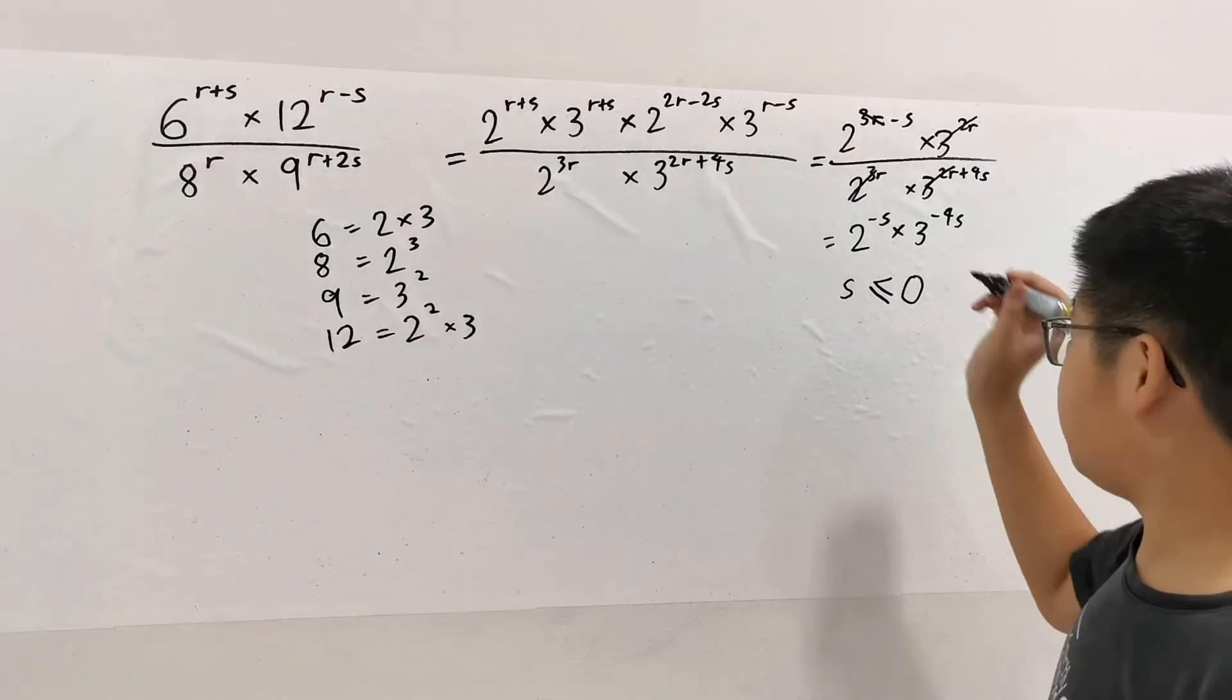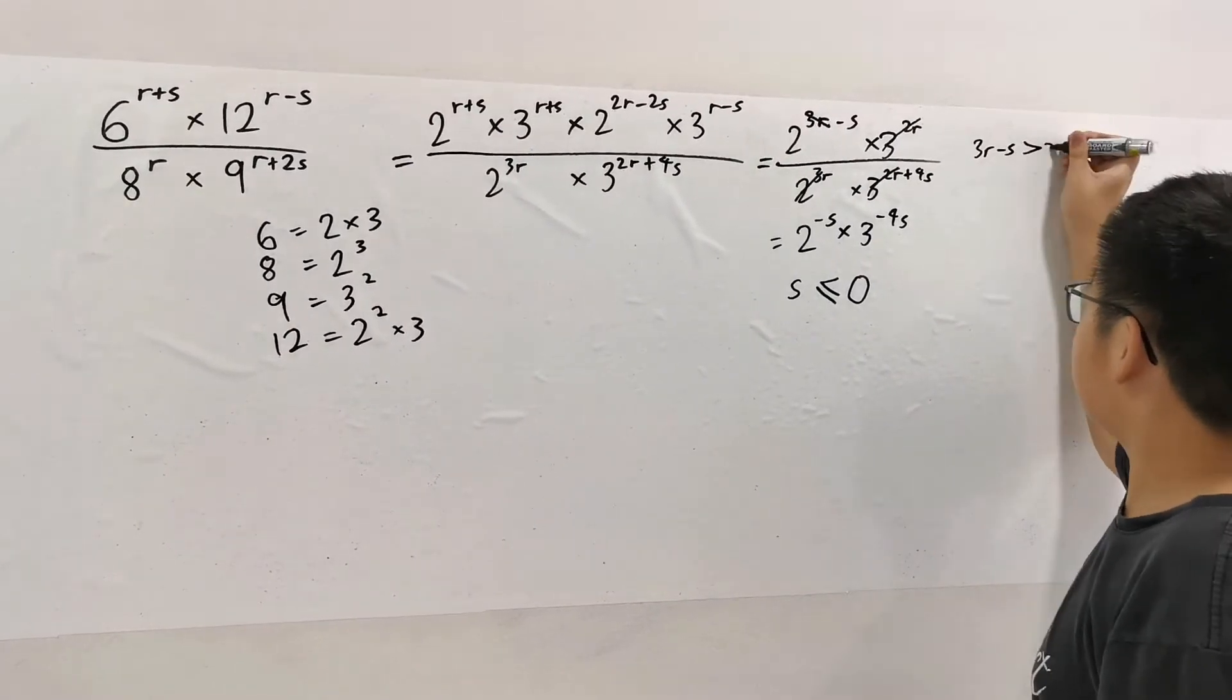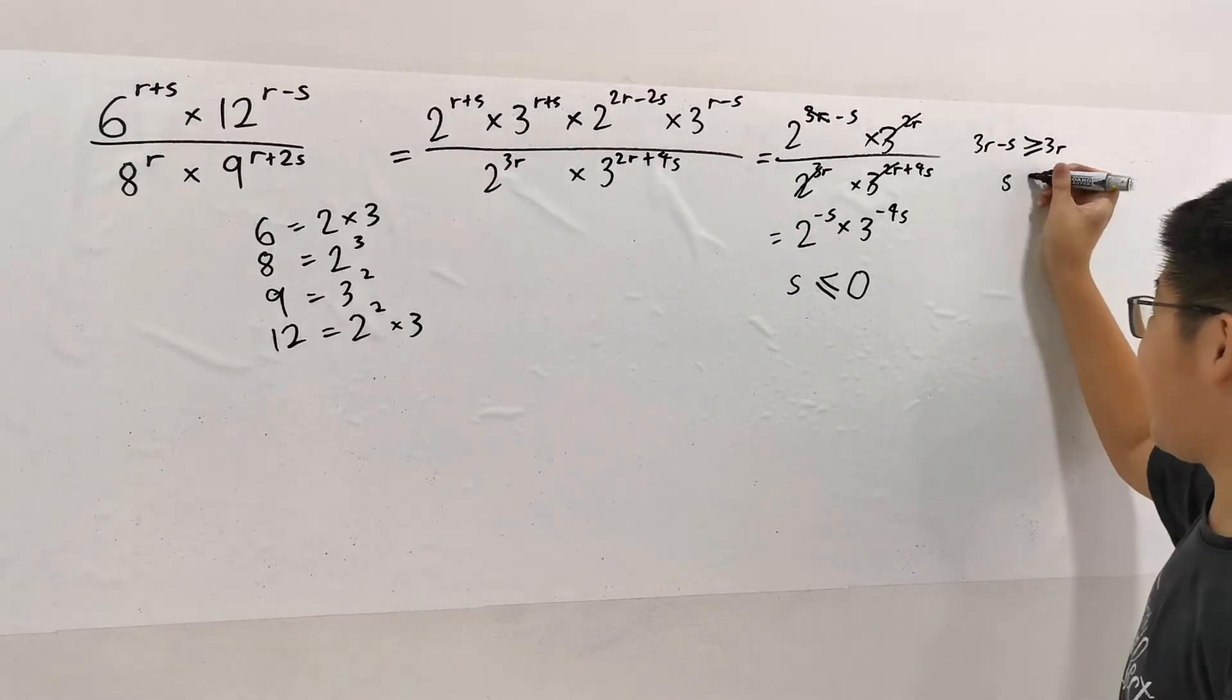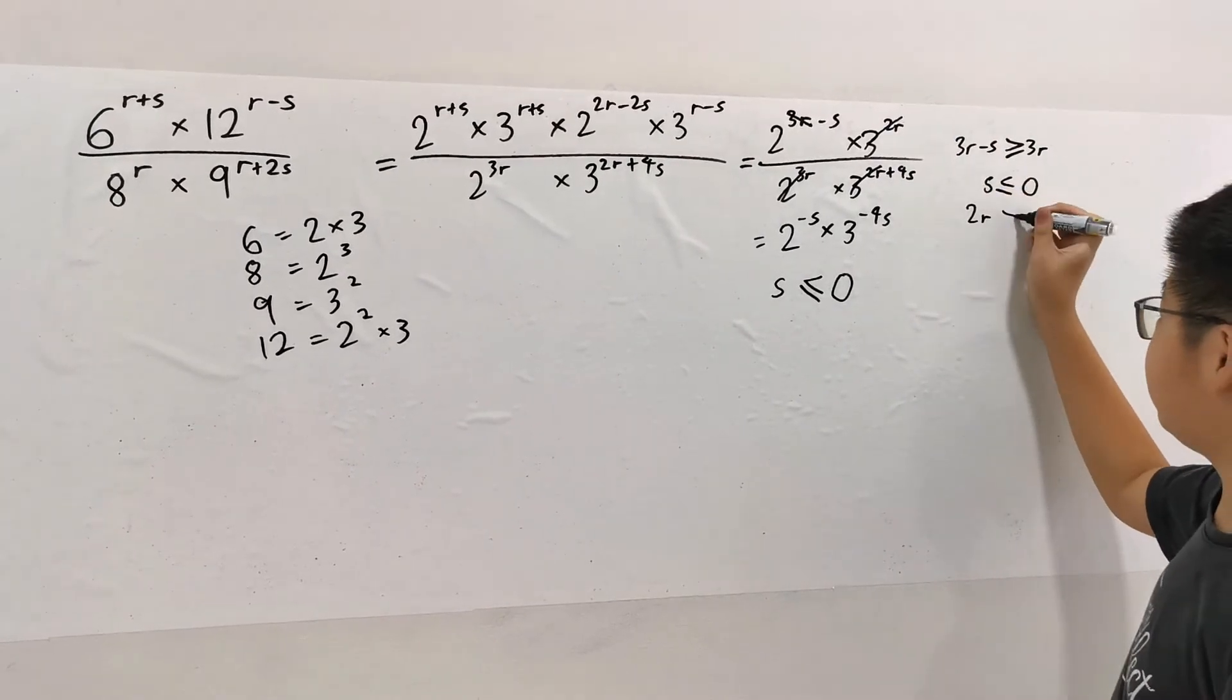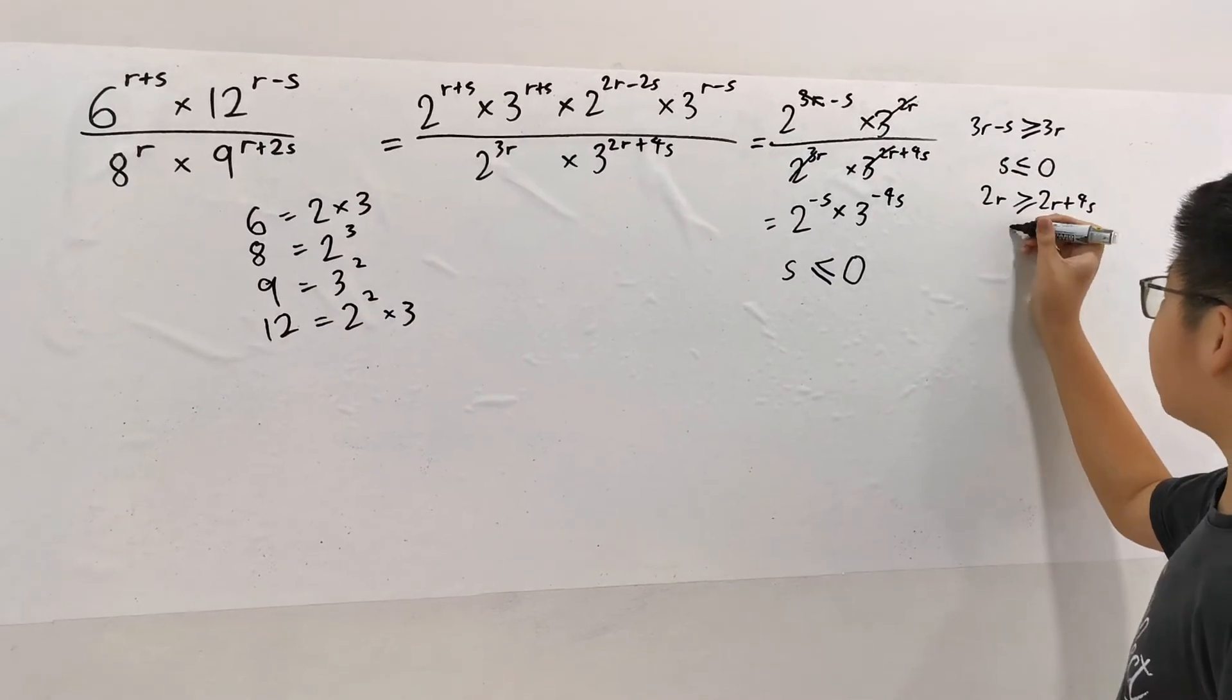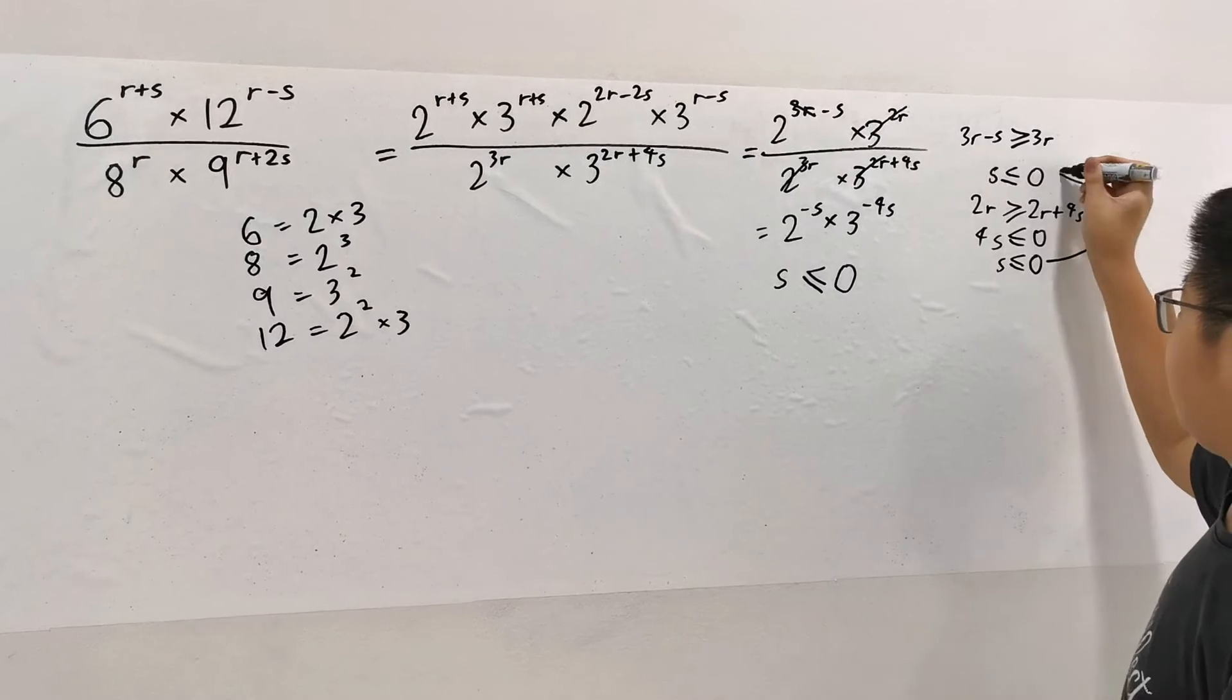Another way to do it is by not crossing out the fractions and realizing that 3R-S must be greater than or equal to 3R for it to be an integer. So that means S must be less than or equal to 0. Try it with the other bunch of 3's to get 2R must be greater than or equal to 2R+4S. Obviously then, 4S must be less than or equal to 0 and S must be less than or equal to 0, which is what we saw here.